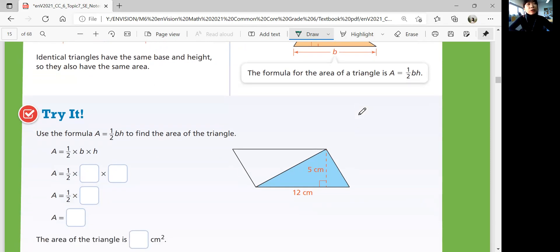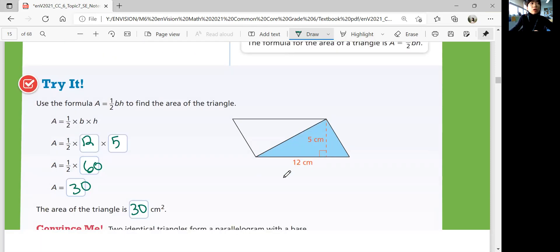Let's look at try it. Using that rule, can you figure out the area of this blue shaded triangle? Okay, base is 12, height is 5. So fill in the base, 12, height is 5. And do the calculation. What's 12 times 5? 60. What's 60 divided by 2? 30. So the area of the triangle is 30 square centimeters.